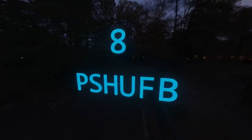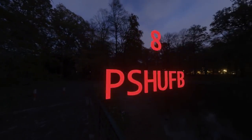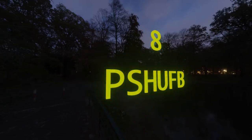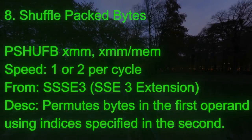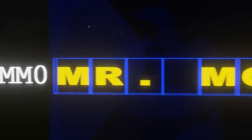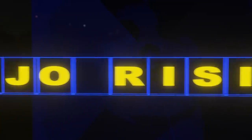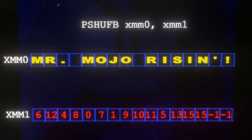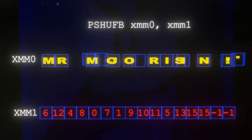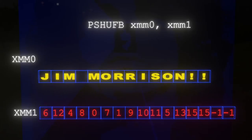Number 8: shuffle packed bytes — PSHUFB. This instruction is amazing. What it does is use the second parameter to select bytes from the first, arranging them in any order whatsoever and storing a permutation in the first operand. In addition to being able to store any permutation of the bytes, we can also store zeros at any position we want. So we can duplicate bytes, switch endianness, zero whatever we want, generate any permutation whatsoever of any of the bytes — and it all happens in about one clock cycle. It's fast, flexible, and powerful.